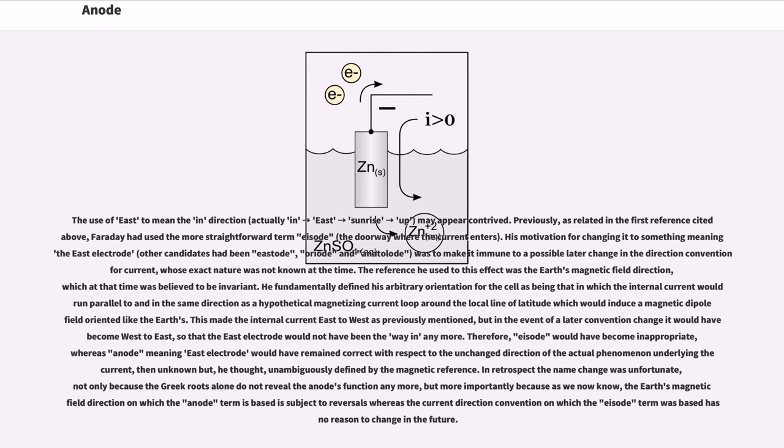Whereas anode meaning east electrode would have remained correct with respect to the unchanged direction of the actual phenomenon underlying the current, then unknown but, he thought, unambiguously defined by the magnetic reference. In retrospect the name change was unfortunate, not only because the Greek roots alone do not reveal the anode's function anymore, but more importantly because as we now know, the Earth's magnetic field direction on which the anode term is based is subject to reversals whereas the current direction convention on which the eisode term was based has no reason to change in the future.